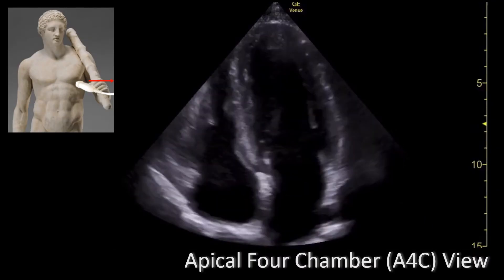Let's talk about the structures we're looking at. You have the left ventricle, the left atrium, and the mitral valve. On the opposite side, you have the right atrium, the right ventricle, and between those two structures you have the tricuspid valve.